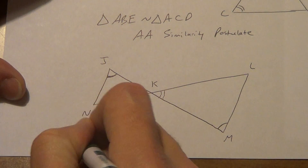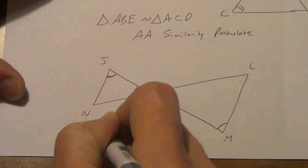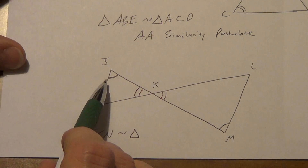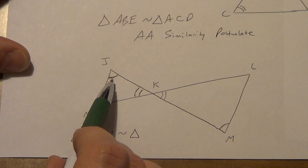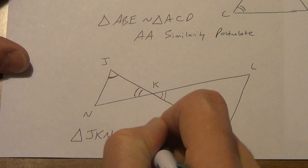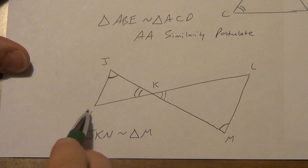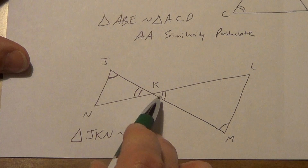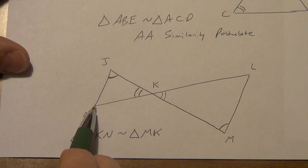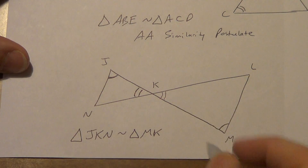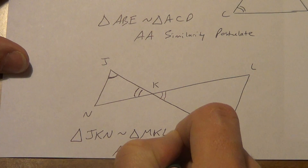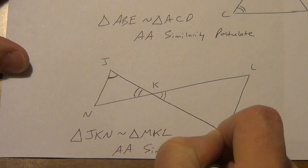Triangle JKN is similar to... J has a mark, so I put M first. K has two marks, so I put K next. N has no marks, so I put L last. Triangle JKN is similar to triangle MKL — angle-angle similarity postulate.